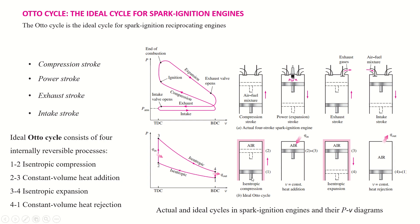There are four processes occurring in the Otto cycle. The first is isentropic compression — the stroke in which the air-fuel mixture is compressed is called isentropic compression. From point one to two is isentropic compression, in which the fresh air-fuel mixture is compressed.